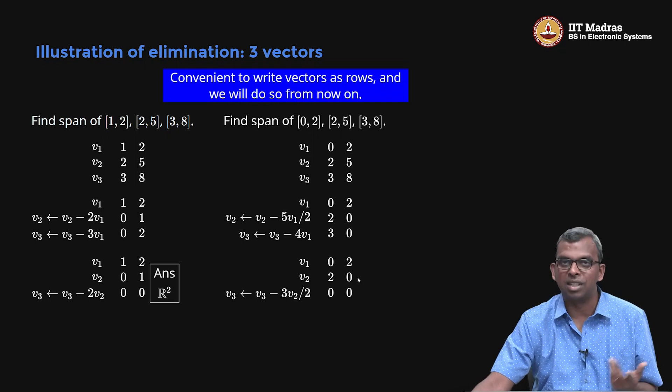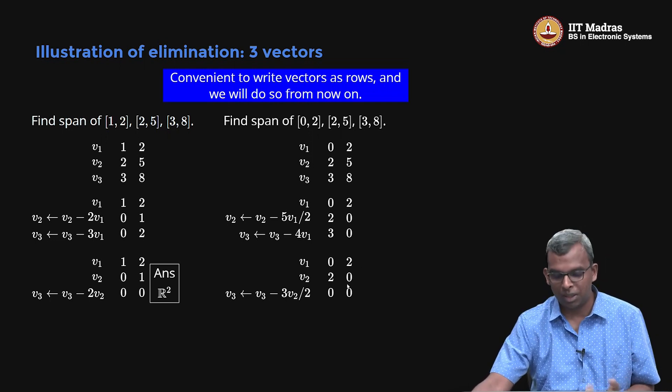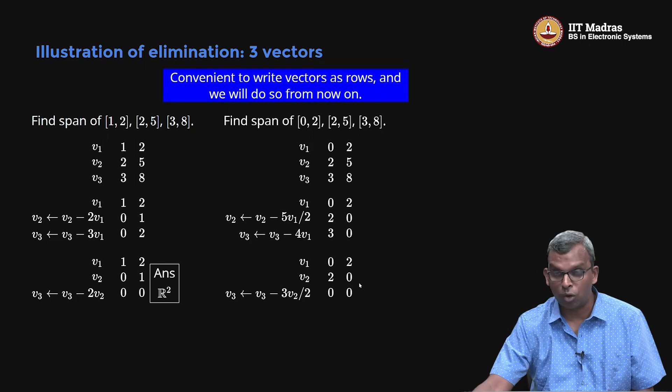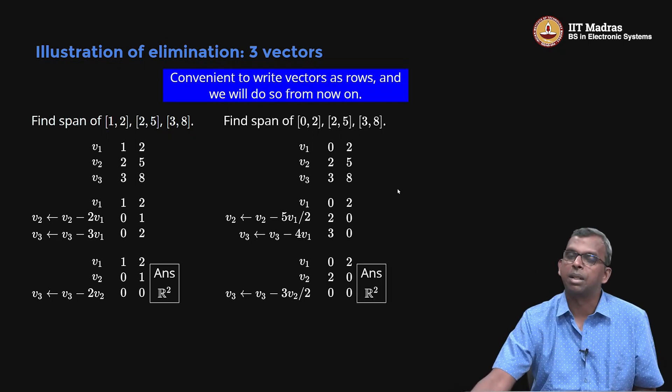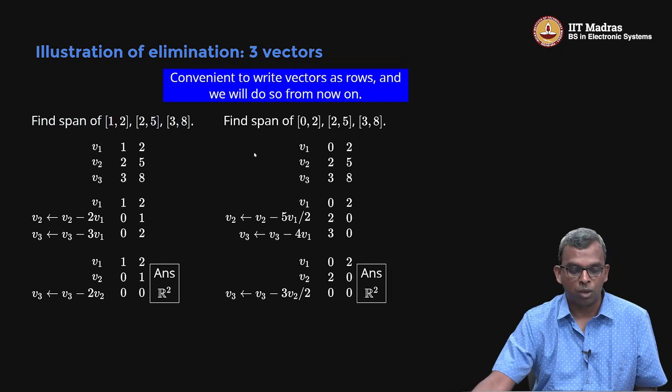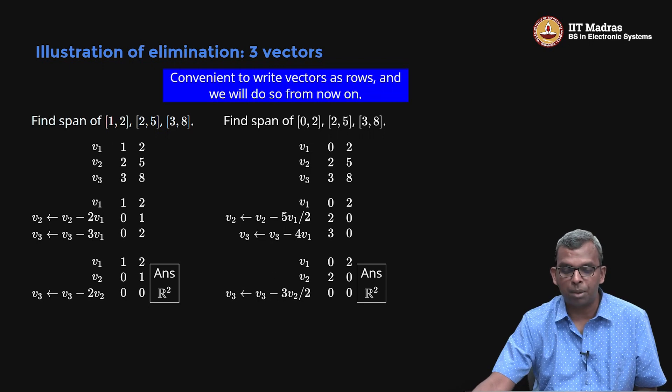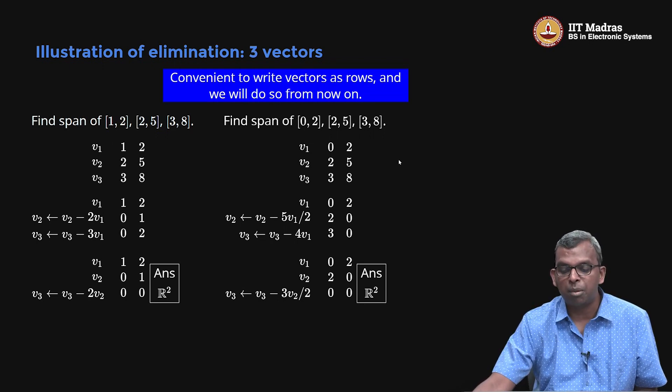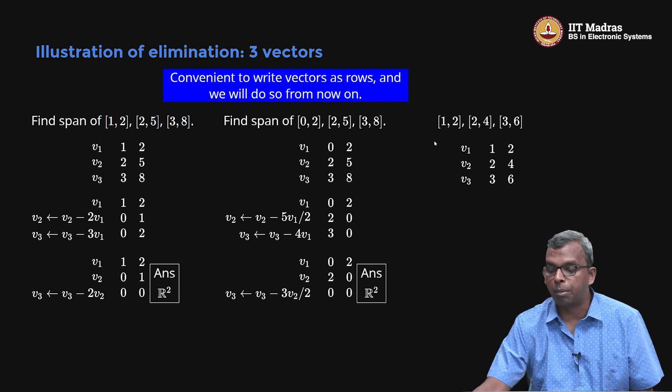Now span of 0, 2 and 2, 0 is easy. It is the same as 0, 1 and 1, 0. This is an easy straightforward example that we saw. So answer becomes R². I hope you see how elimination is helping you do span for any number of vectors in actual examples.